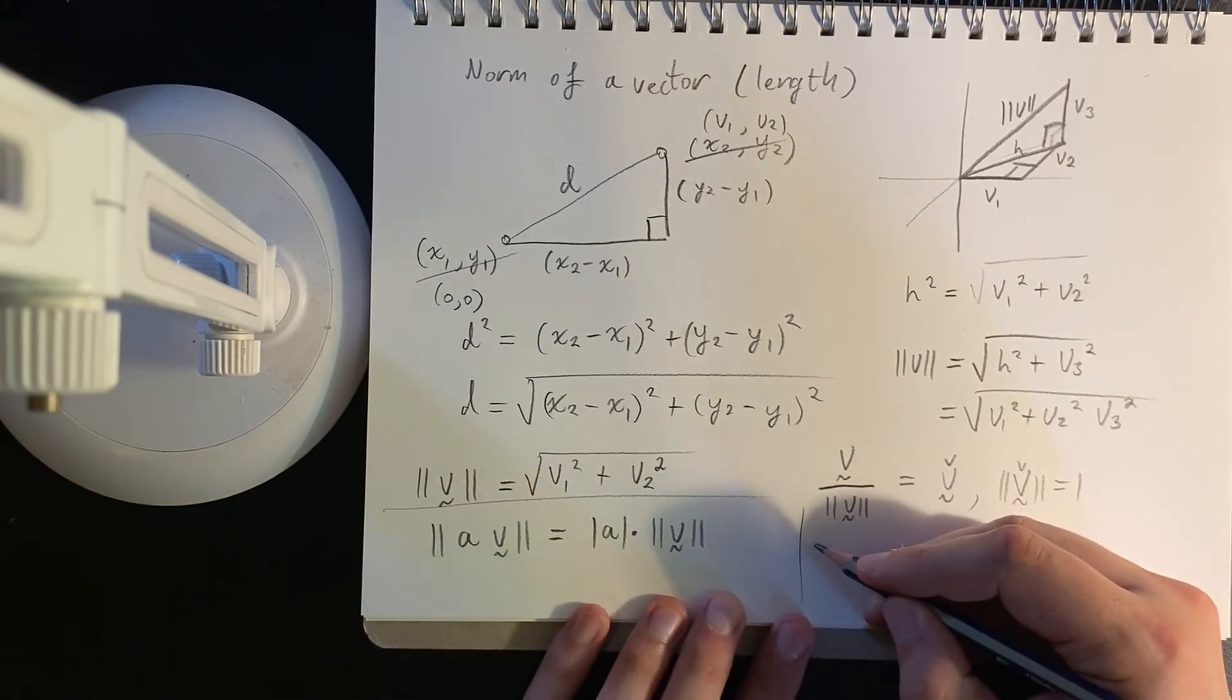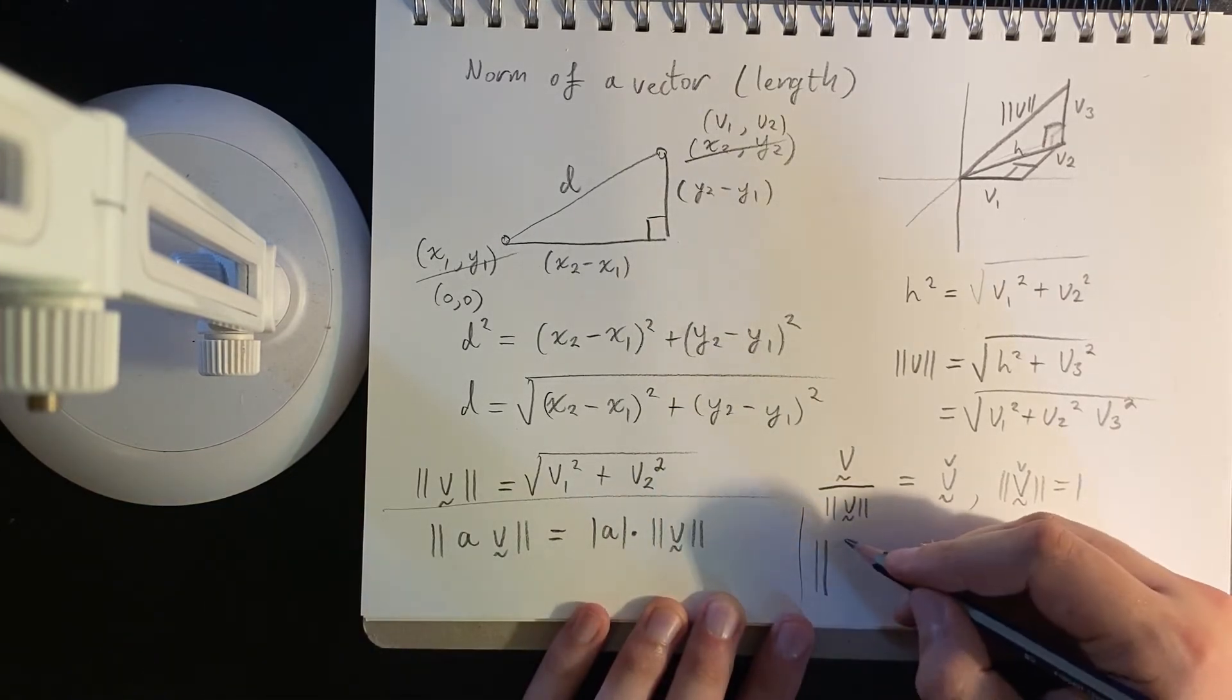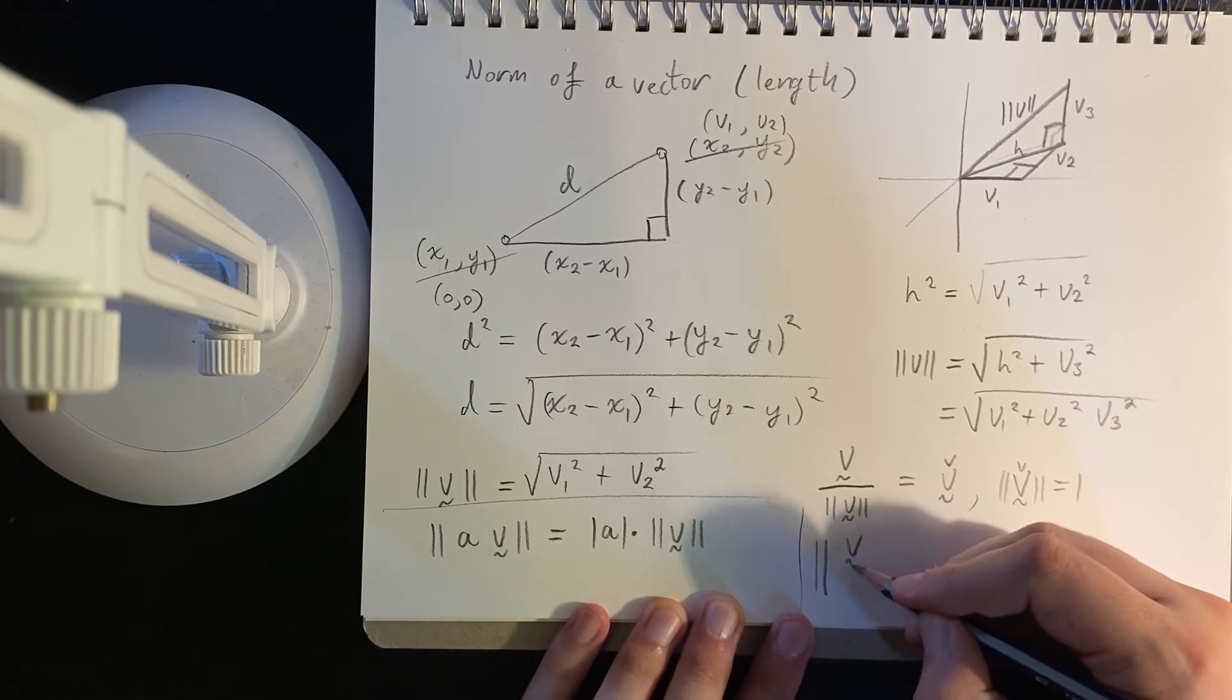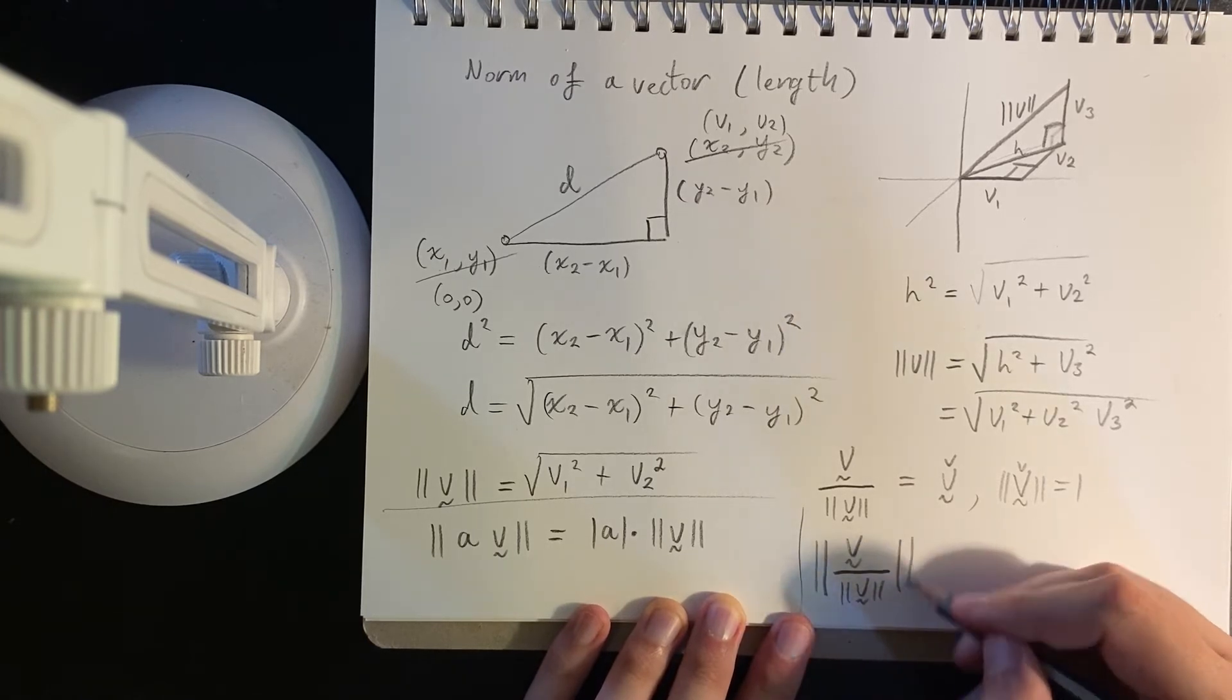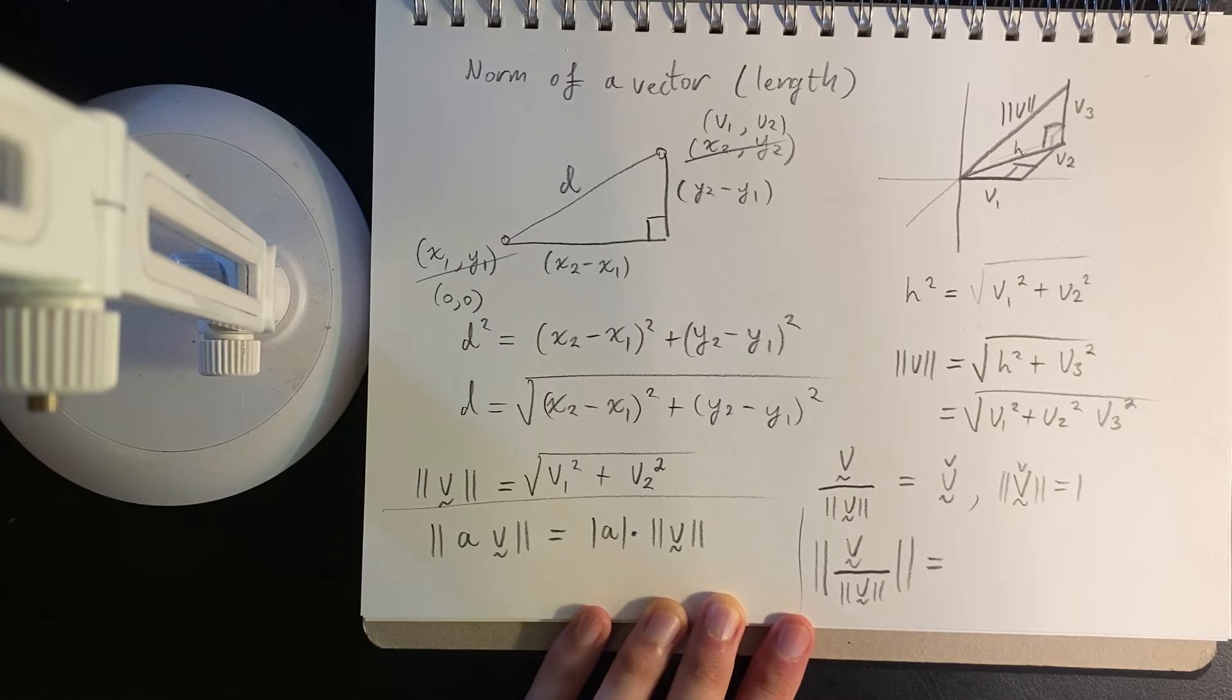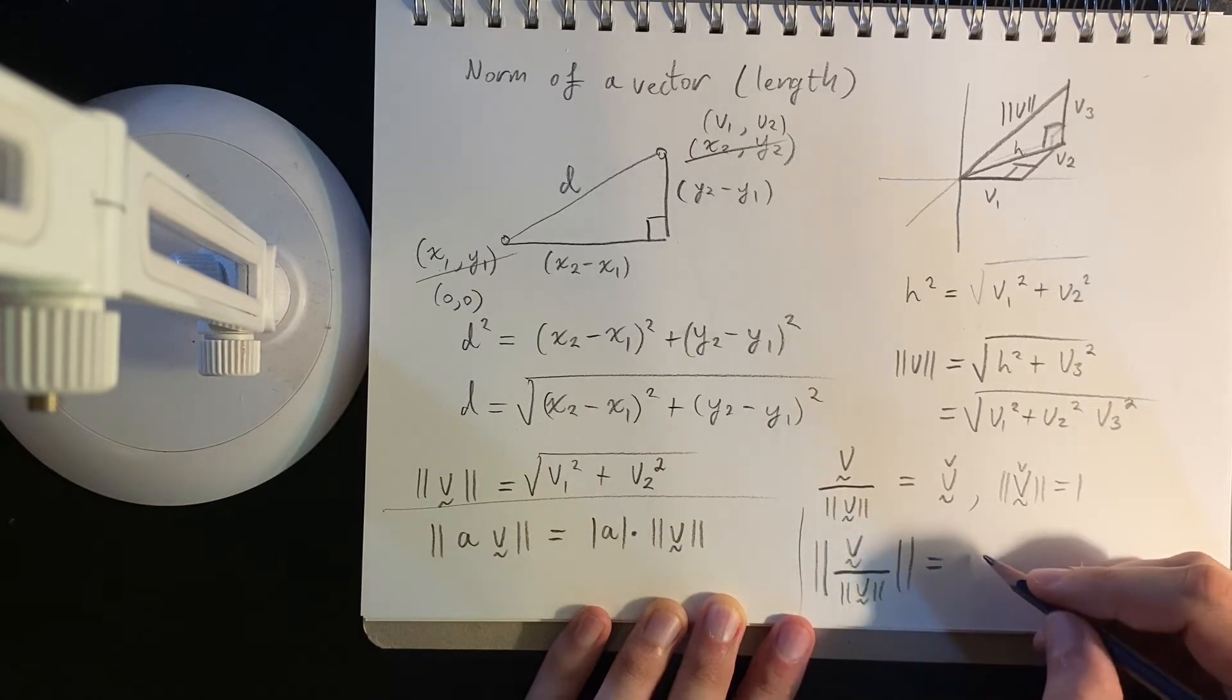So let's say I want to get the norm of V hat. So that's the norm of this over its own norm. Well, this is just a real number. So in other words, it is the absolute value of the real number.